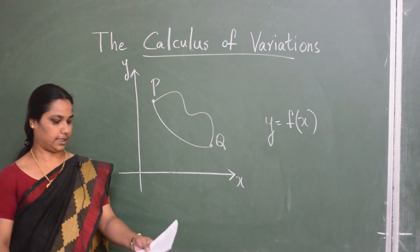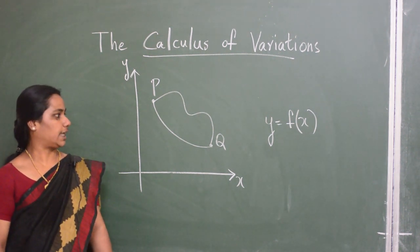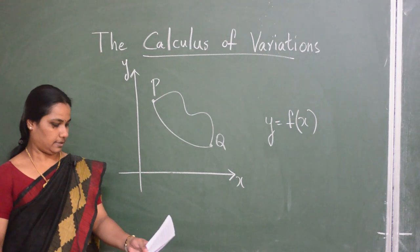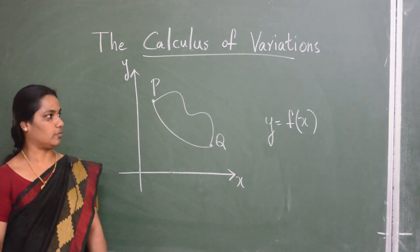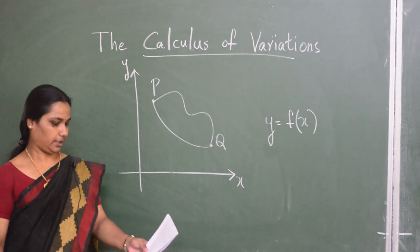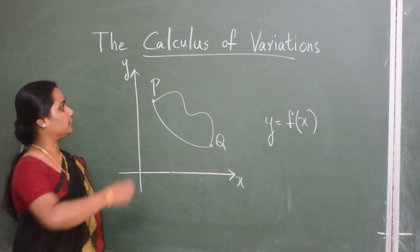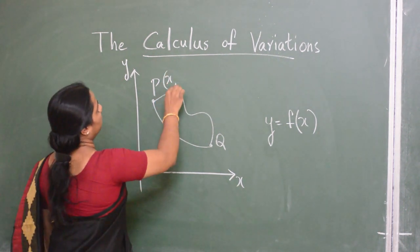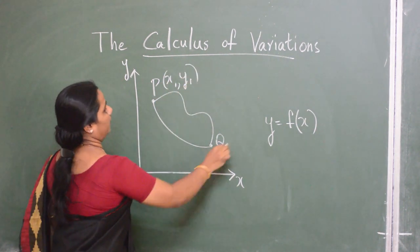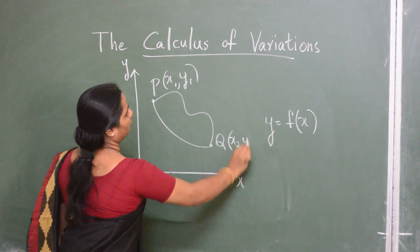So all these three minimizing problems can be considered as the special cases of a more general problem. Let P and Q have coordinates x1, y1 and x2, y2.